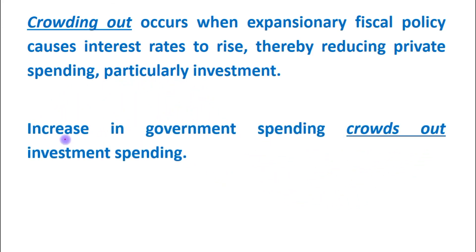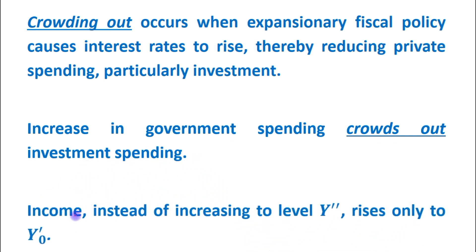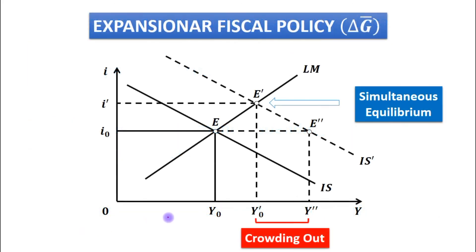The increase in government spending crowds out investment spending, and that is the reason income, instead of increasing to level y double-dash, increases only up to y dash 0.